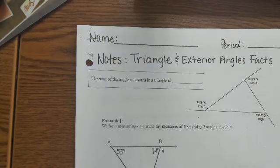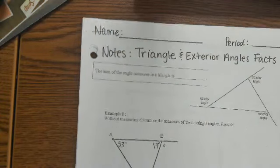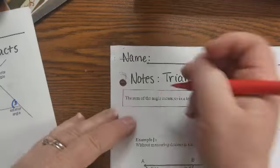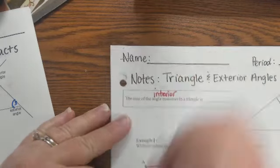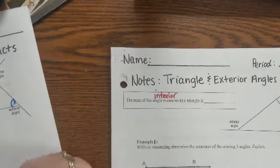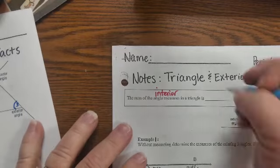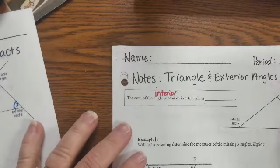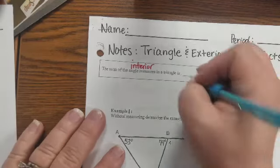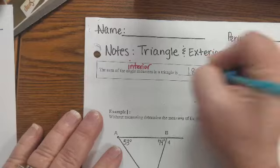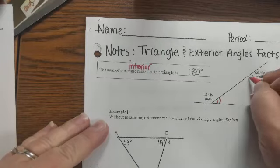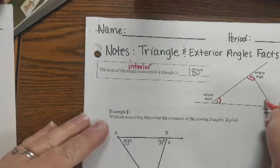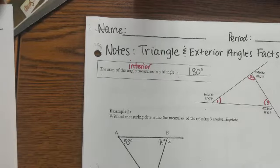The sum of the interior angle measures in a triangle is — please tell me you just said 180 degrees. We went over that yesterday. We've got three interior angles. Here's angle number one — it doesn't matter which ones you name what. I'm just showing you the interior angles.